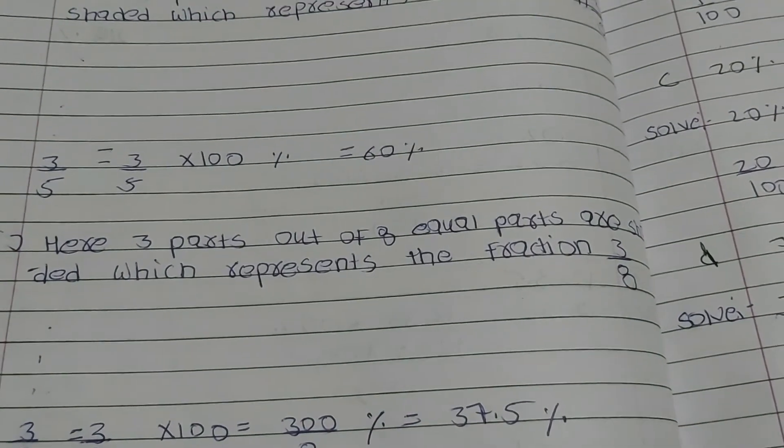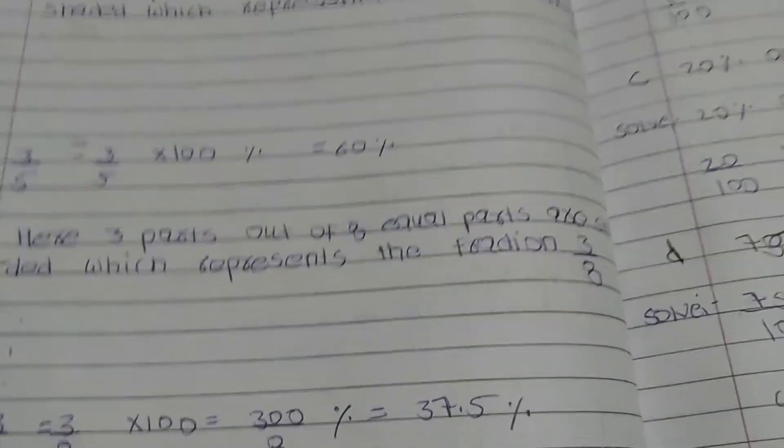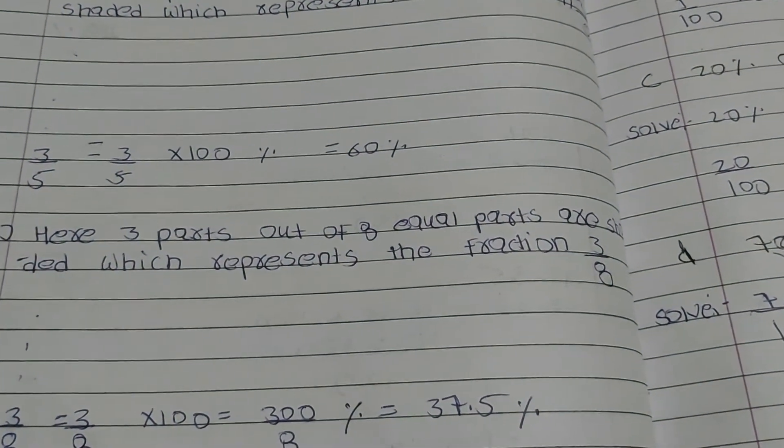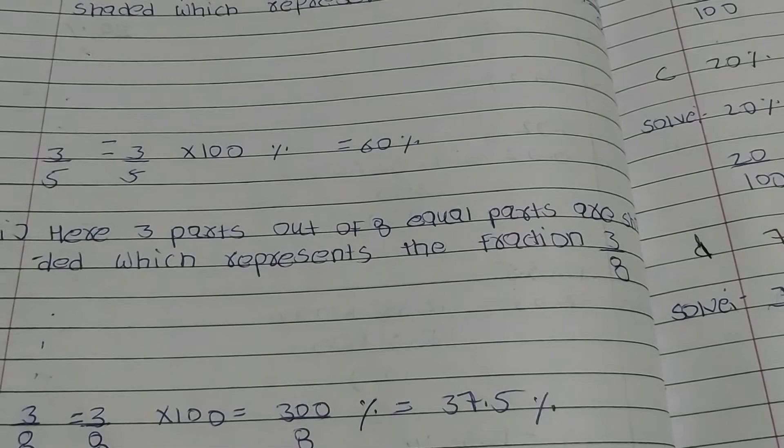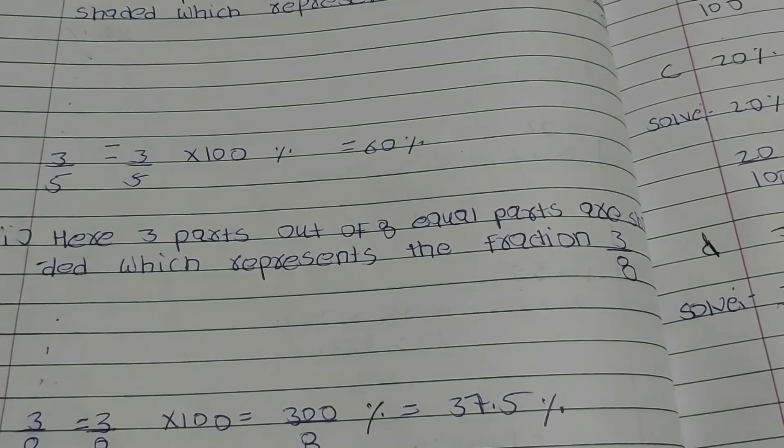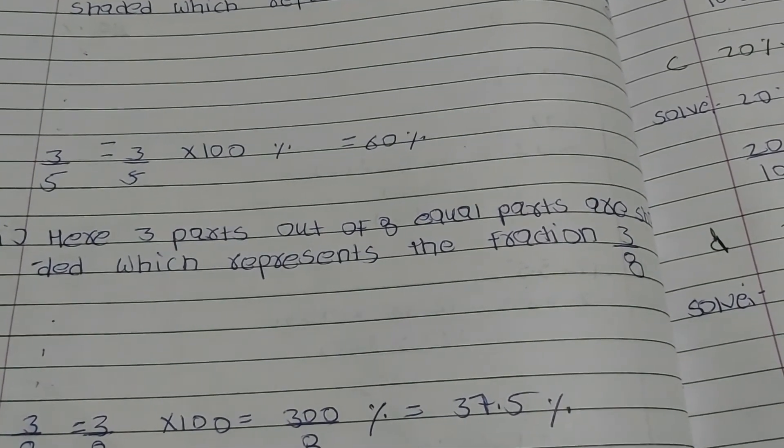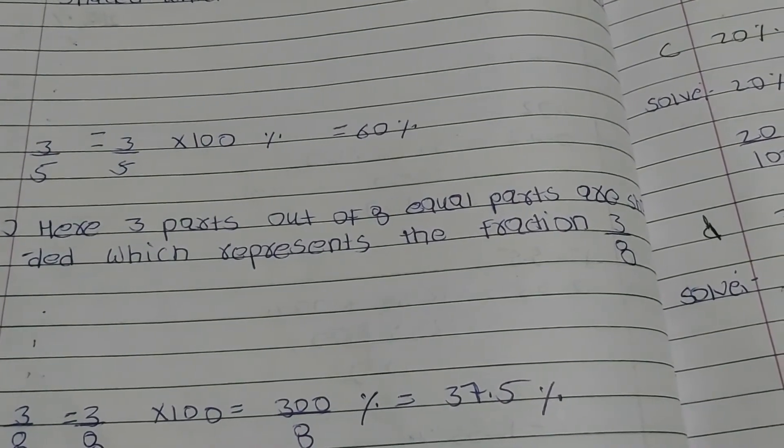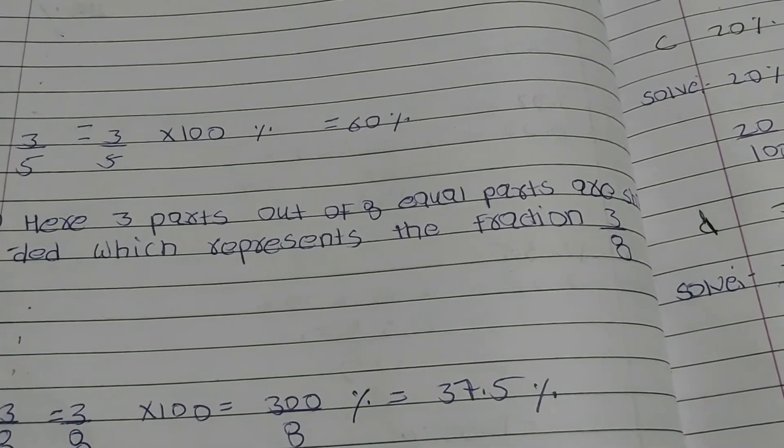Percent is represented by the symbol - you can see here the symbol. One percent means one out of 100. One percent can be written as 1/100 or 0.01.